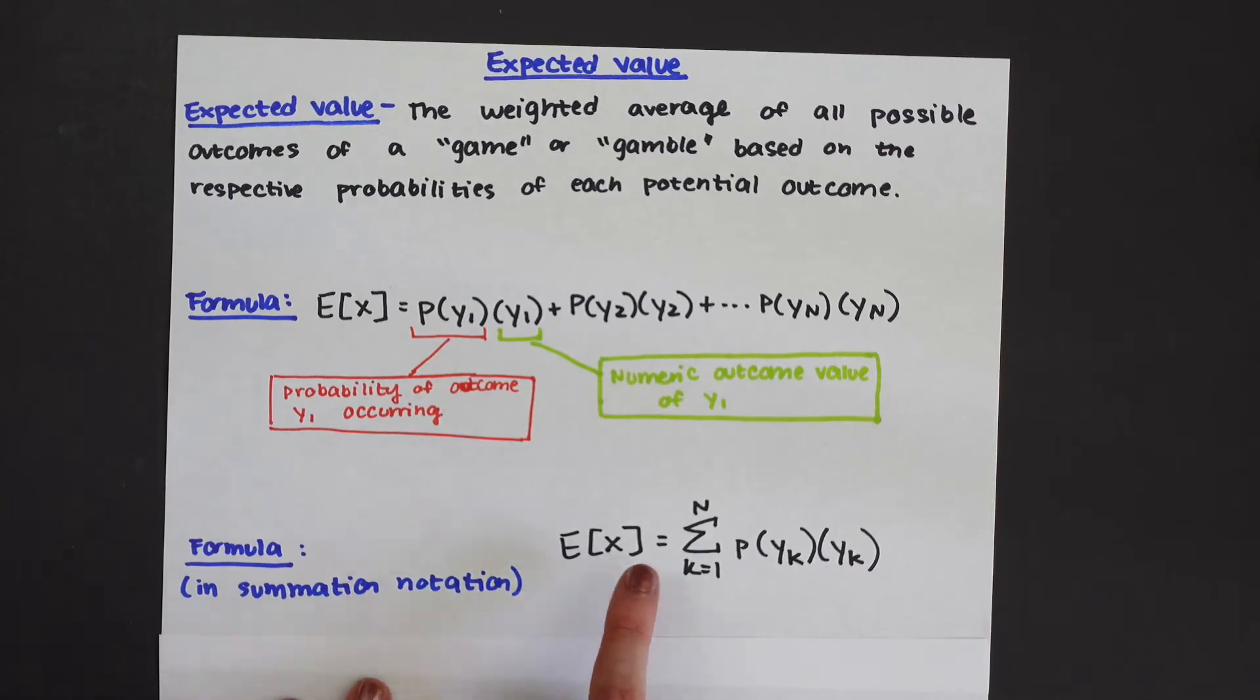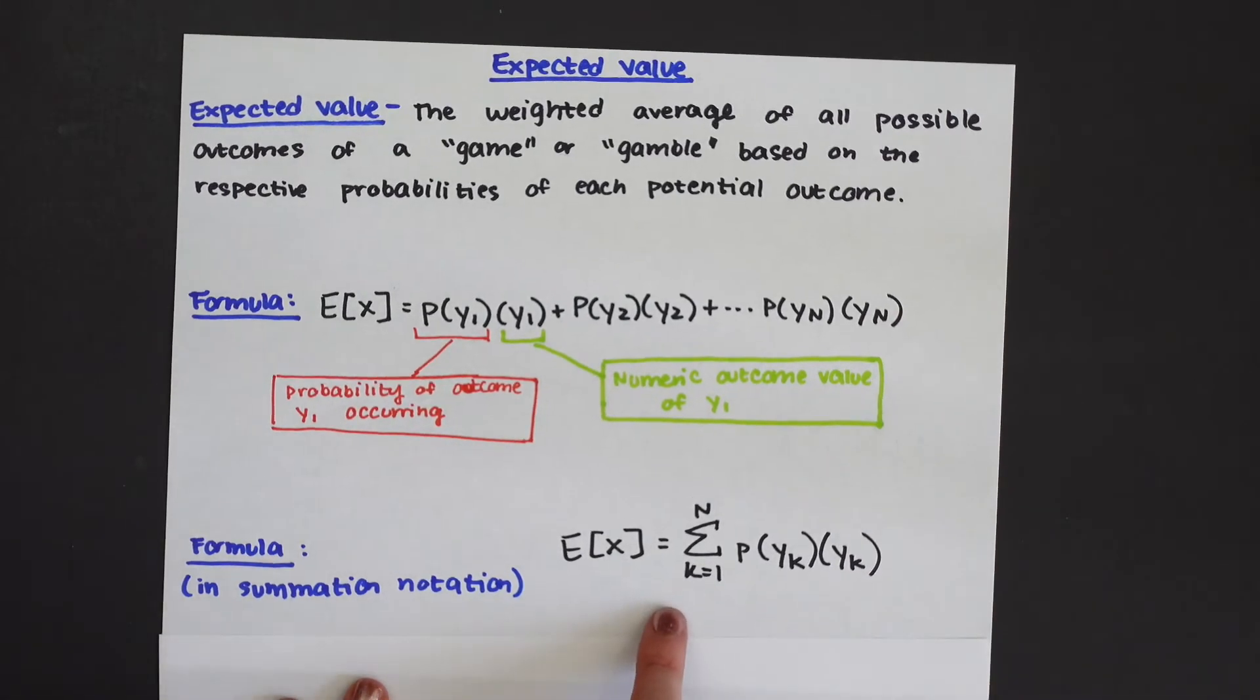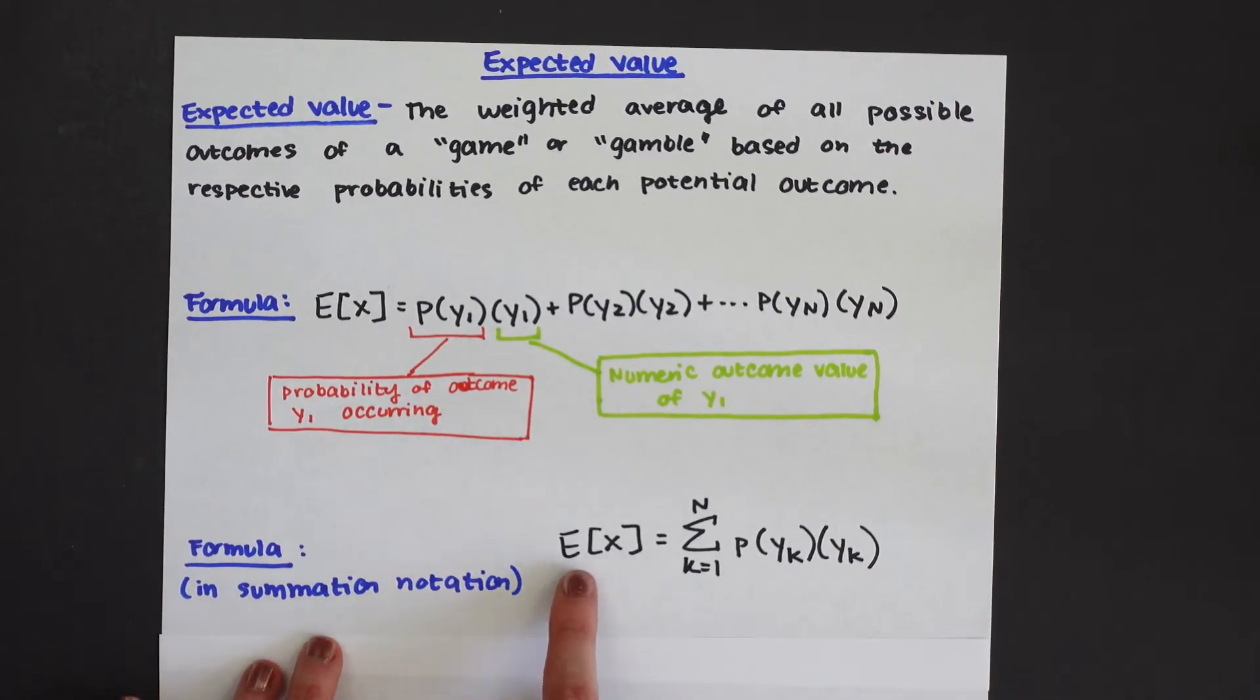So just to put it in a shorter hand in summation notation we have E[X] is equal to the sum of k equals 1 all the way to n. So that's like the first observation all the way to the nth observation and then we just have the same thing here: the probability of outcome yk occurring times the actual numeric outcome of yk.